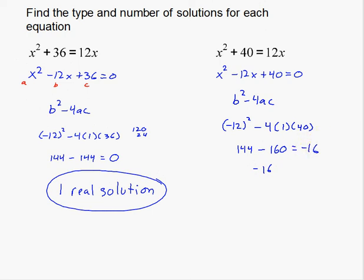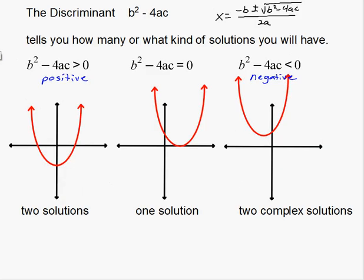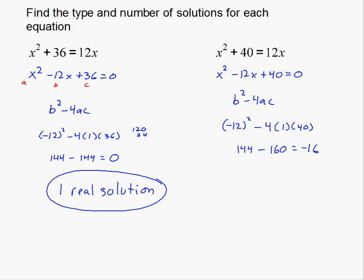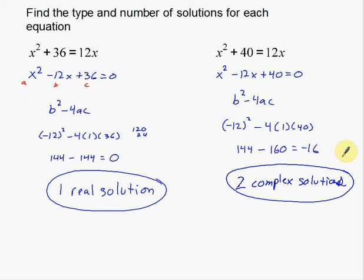A discriminant of negative 16 means it's negative, so I have two complex solutions — this is where imaginary numbers come in. There's not a whole lot of use for the discriminant outside of quadratic formulas, but that little piece tells you so much: how many solutions you'll have, whether you get one real solution, two real solutions, or two complex imaginary solutions. It's actually quite a powerful little part of the formula.